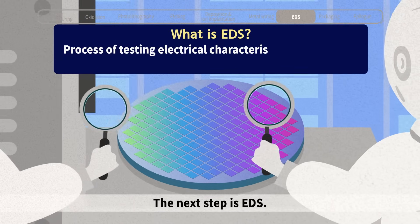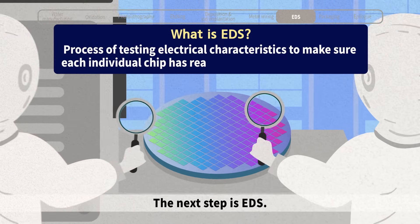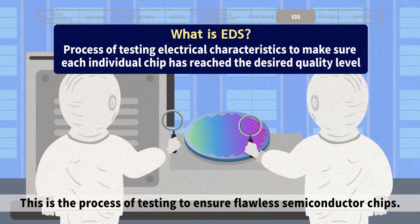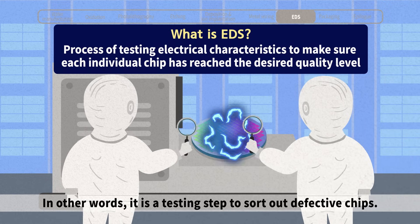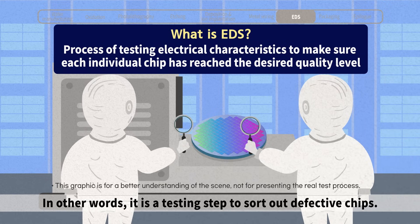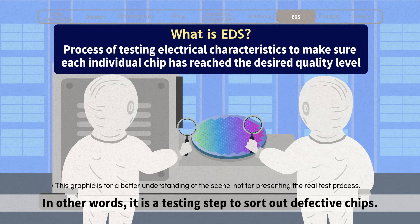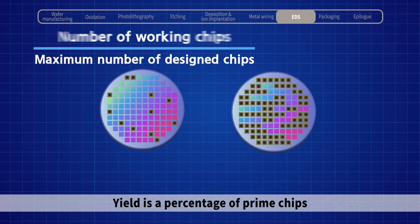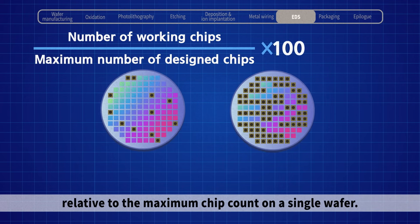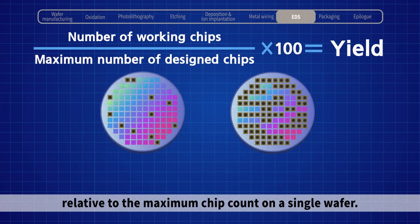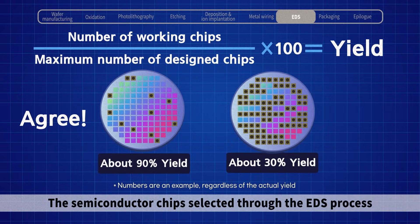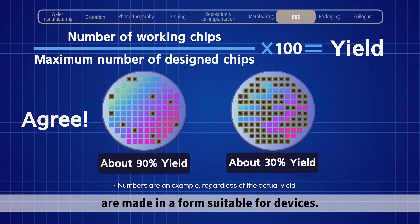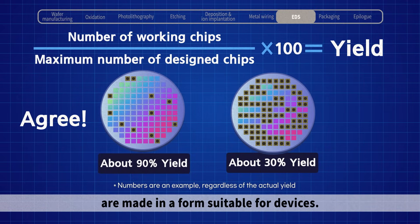The chip manufacturing processes are now coming toward completion. The next step is EDS — the process of testing to ensure flawless semiconductor chips. In other words, it is a testing step to sort out defective chips. Yield is a percentage of prime chips relative to the maximum chip count on a single wafer. The semiconductor chips selected through the EDS process are made in a form suitable for devices.